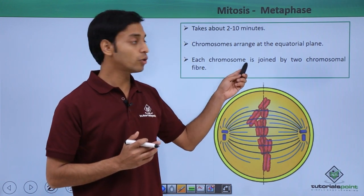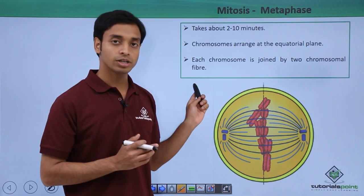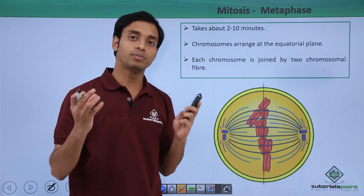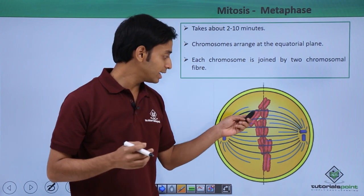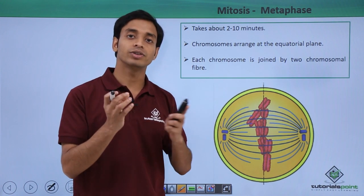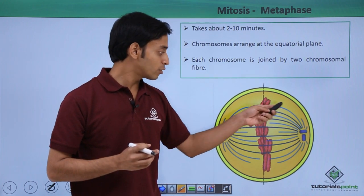Each chromosome is joined by two chromosomal fibers. From both the asters at the opposite poles or opposite ends, the microtubules come up and they attach at the centromere with the help of kinetochores.